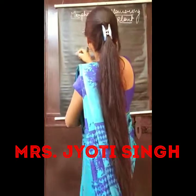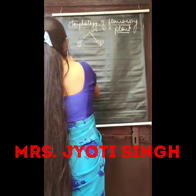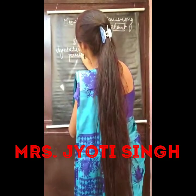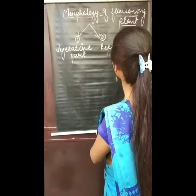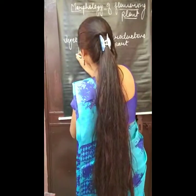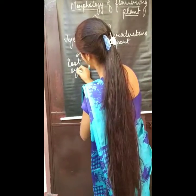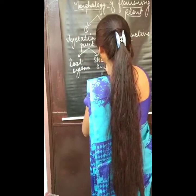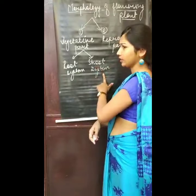We can divide flowering plants into two parts. First is the vegetative part and second is its reproductive part. The vegetative part can also be divided into two parts: its root system and its shoot system. The root system is found underground and the shoot system is found above the ground surface.